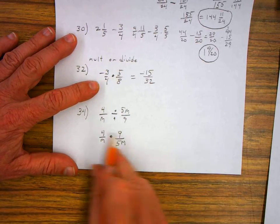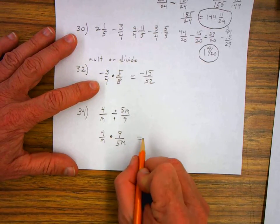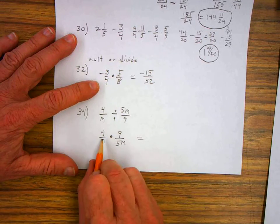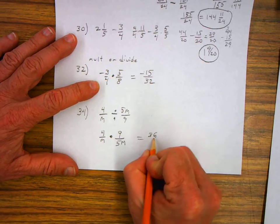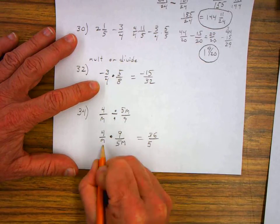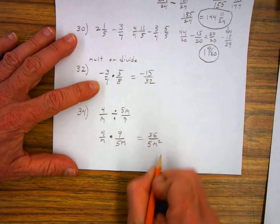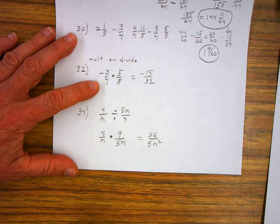We can't reduce these numbers in any way. So now we're just left with multiplying. Nine times four is thirty-six. Five M squared is on the bottom. And that's our final answer.